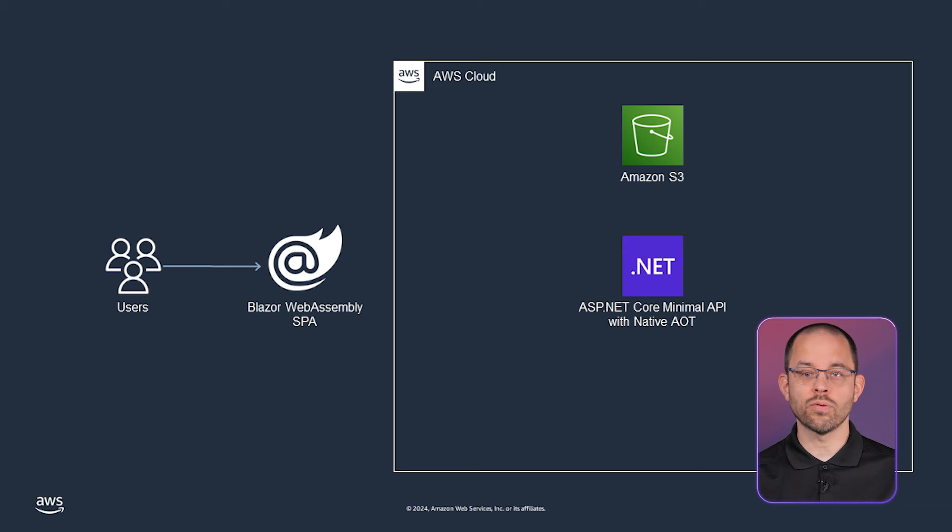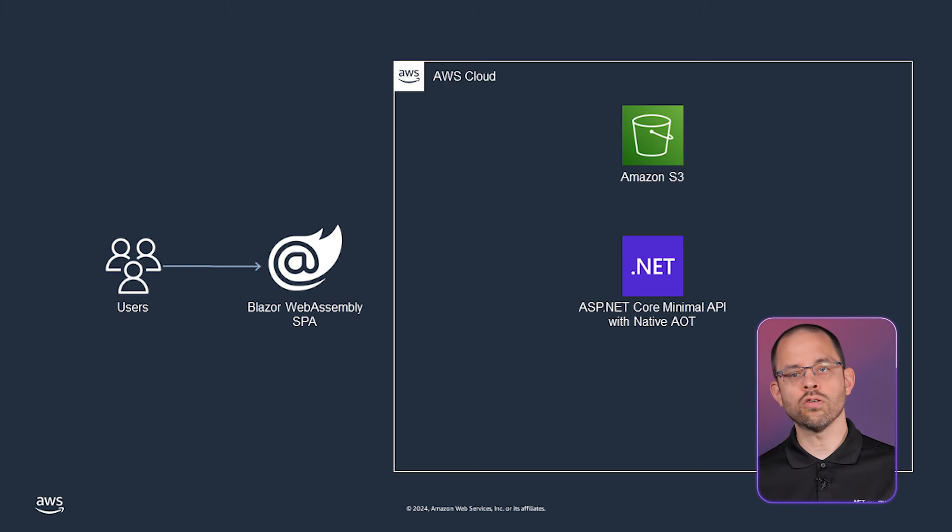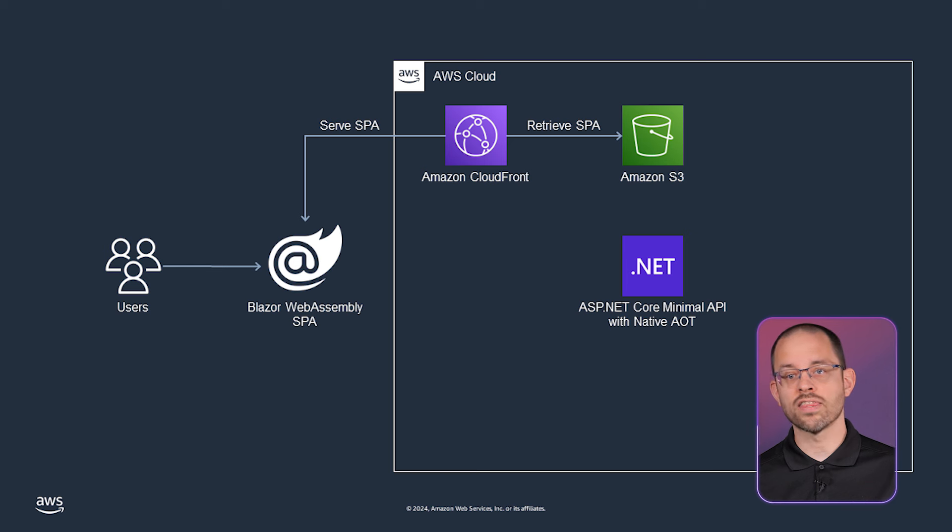Let's start with your single-page application. Like for an Angular, React, or Vue.js single-page application, you can serve your Blazor WebAssembly application as static assets. A robust, while cheap, way to do so is to host the HTML, CSS, binary, and asset files of your Blazor WebAssembly in an Amazon S3 bucket. Then you can configure an Amazon CloudFront distribution to get a URL endpoint and serve your application.